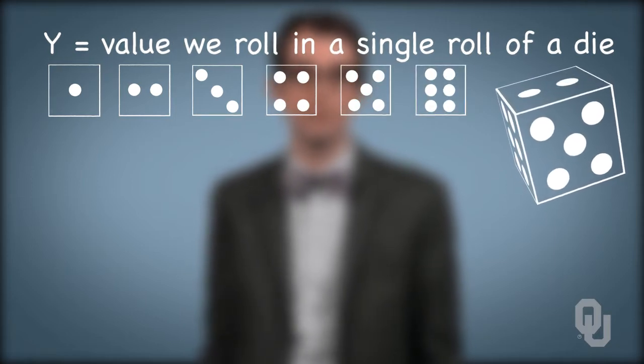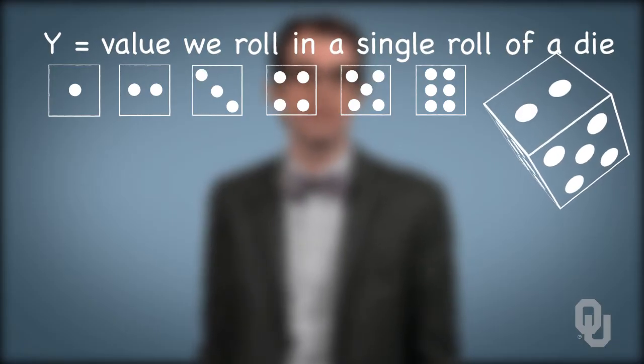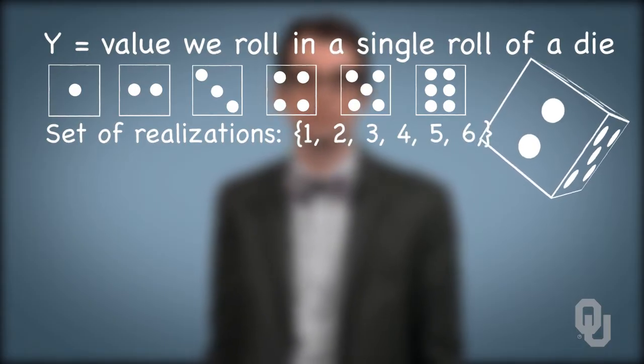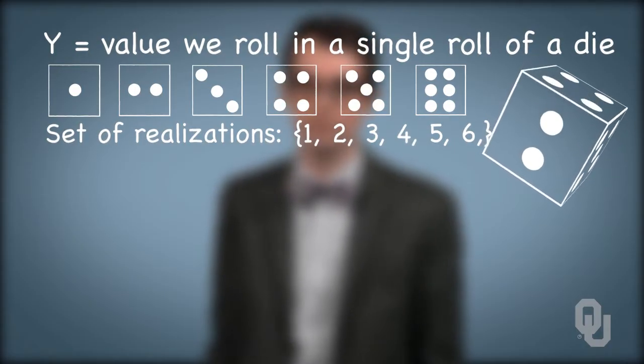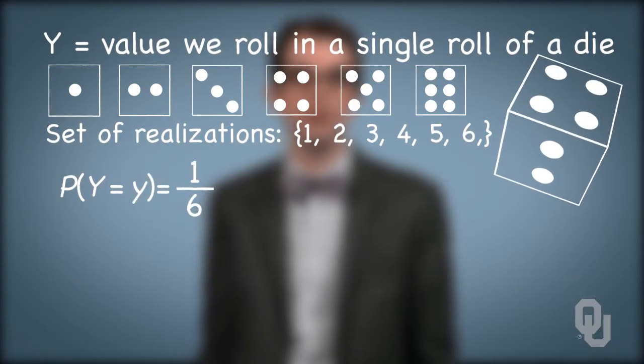And assuming no funny business with the die, all of those rolls are equally likely. The set of realizations is the set containing integers one through six, including one and six. There are six possible realizations, therefore the probability of any particular realization is one divided by six.